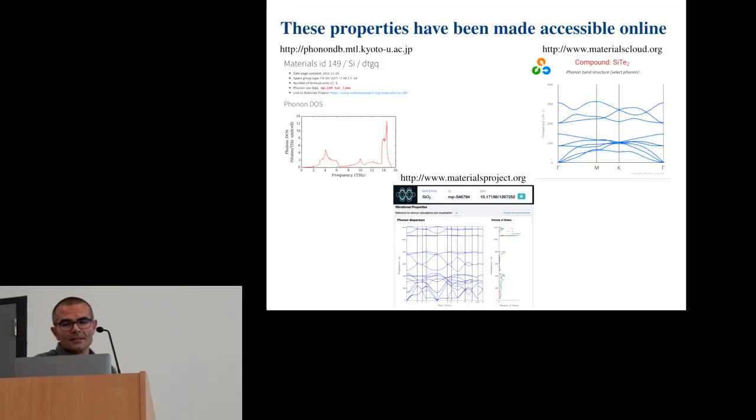So, then, once the data have been computed, in most of the cases, people make the effort to have an interface where you can go and check different materials. So, this is the interface of the Togo database, where you can click and you have certain properties that you can have there. Nikola showed us the materials cloud where you can see phonon band structures, and on the materials project, we also have different phonon band structures that are available.